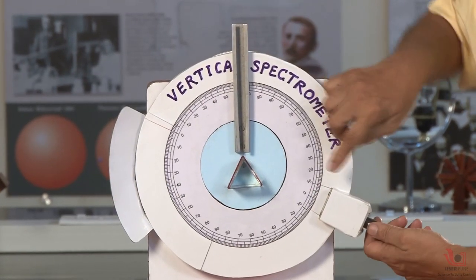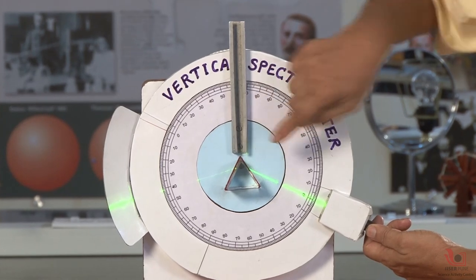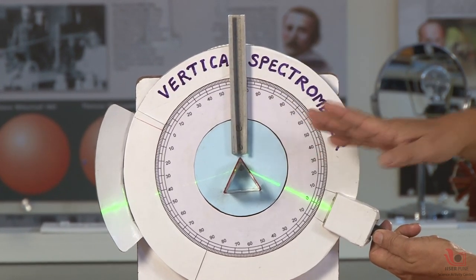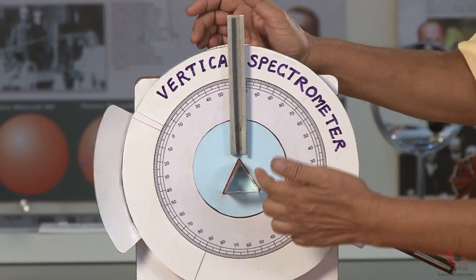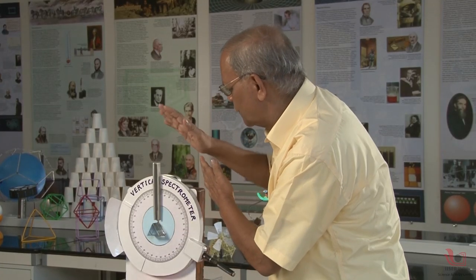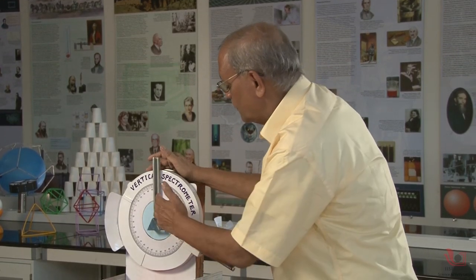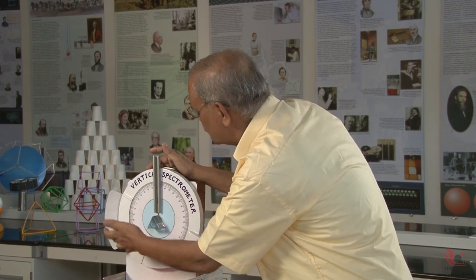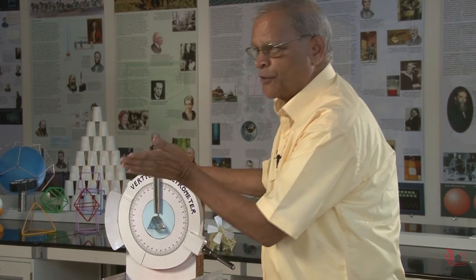You can observe the ray of light coming here. It is incident here, undergoing a change of medium from air to glass, so it bends towards the normal. When it comes from glass to air, it bends away from the normal. So the bending occurs twice—once inside and once outside.